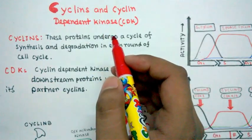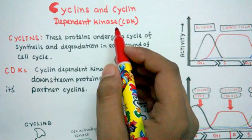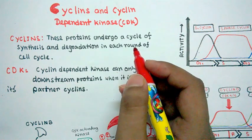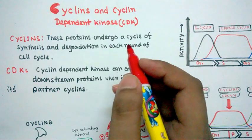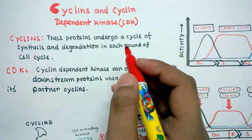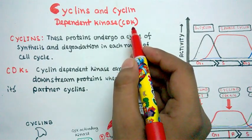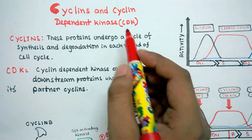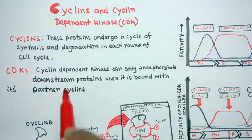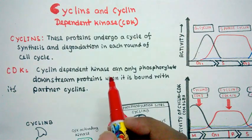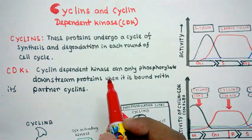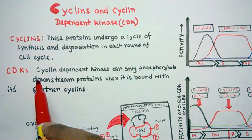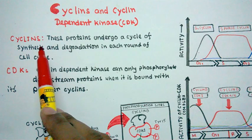In this video I'm going to talk about cyclins and cyclin-dependent kinases. Cyclins are proteins which help in cell cycle regulation together with their partners, cyclin-dependent kinases. CDKs are kinase enzymes whose key role is to phosphorylate downstream proteins. Something special about these CDKs is that a cyclin-dependent kinase can only phosphorylate its downstream target proteins when it is bound with its partner cyclin.